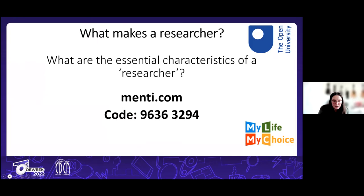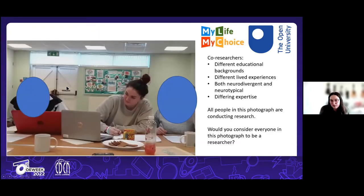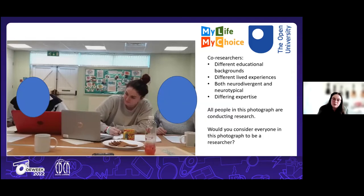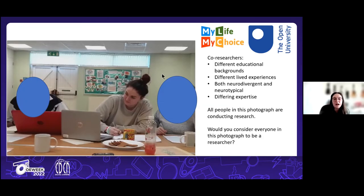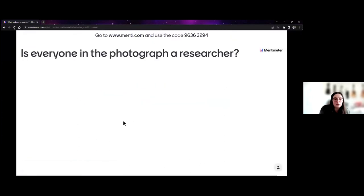Now I want to show you a picture of the research I was doing. I've blanked out the faces of my co-researchers for their anonymity. I want to discuss the three different co-researchers: people from different educational backgrounds, different lived experiences, a mixture of neurodivergent and neurotypical people, and people with differing expertise. All the people in this photograph are conducting research. I'd like you to vote on Mentimeter — do all of these people classify as a researcher?